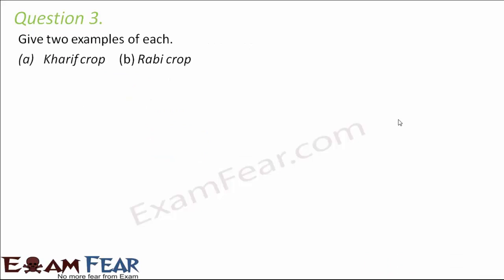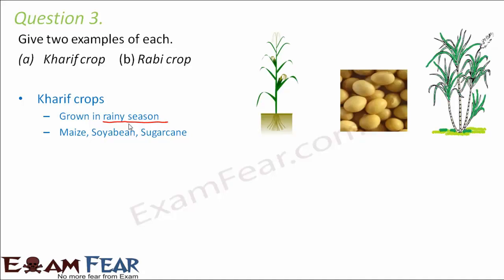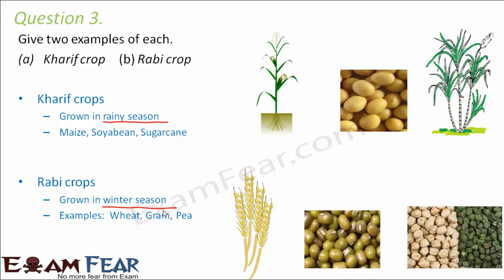Question number three: give two examples of each — kharif crop and rabi crop. Kharif crops are grown during the rainy season and need more water; examples include maize, soybean, and sugarcane. Rabi crops are grown in the winter season and need lesser water with a moderate climate; examples include wheat, gram, and pea.